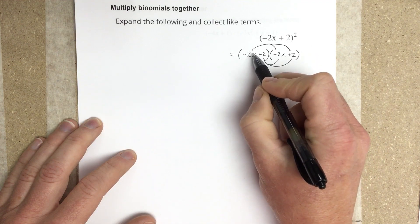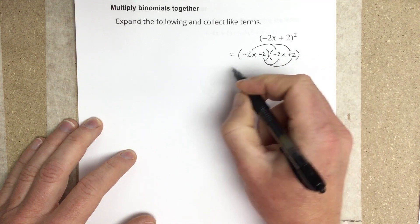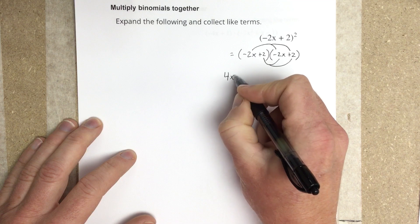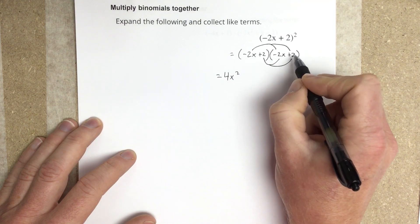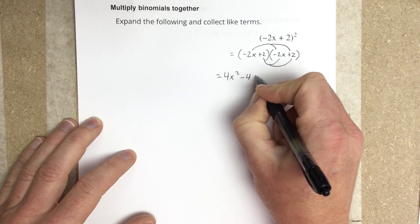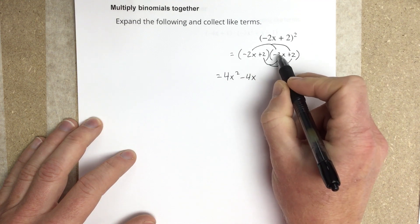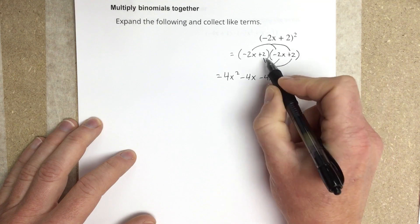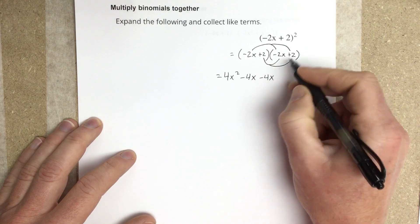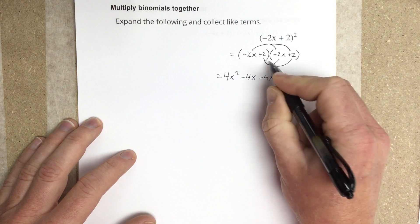So we have negative 2x times negative 2x, that's 4x squared. Then negative 2x times 2, that's minus 4x, and 2 times negative 2x, that's minus 4x again. And then 2 times positive 2, that's plus 4.